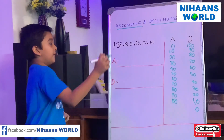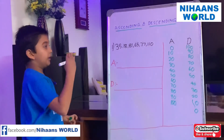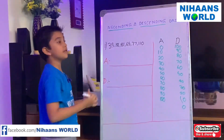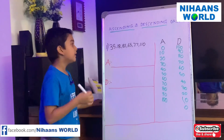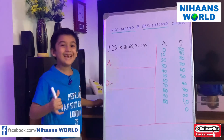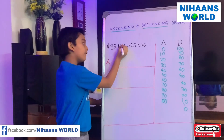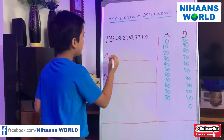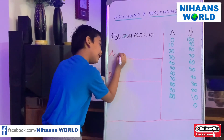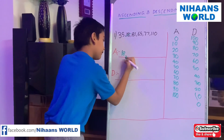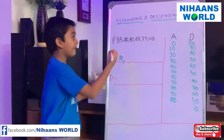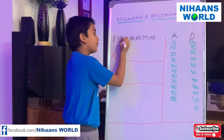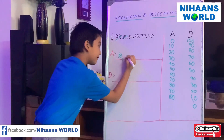Let us now solve the example. Is 35 the smallest? No. Is 18 the smallest? Yes! So we write 18 here. Now what will come next? 35 will come? Yes! So we write 35, and then 65.